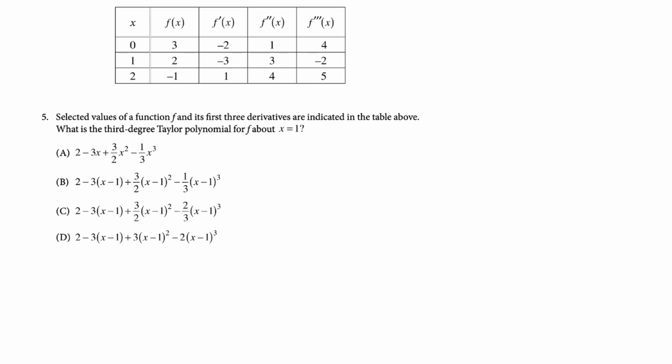Number five. Selected values of a function f and its first three derivatives are indicated in the table above. What is the third degree Taylor polynomial for f about x equals one? First up you look at it and you're like about x equals one. That's really important. It means that the polynomial will always have quantity x minus one which means a cannot be the answer. But then I noticed something I'm like well a is probably a distractor which means if you look at these those are probably the actual coefficients which makes me think that b is going to be the answer. I'm going to do the problem anyway because it would be silly to answer based on that but I think the answer is going to end up b.